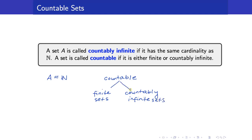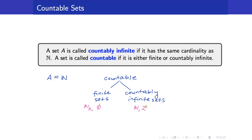What are examples of finite sets? Here we have N_k, or of course the empty set. A countably infinite set is of course the set of natural numbers itself. From our previous video lecture, we have also shown that the set of integers is equivalent to the set N, so therefore it is also countably infinite.